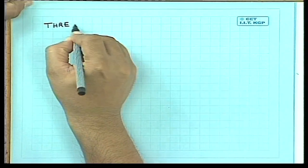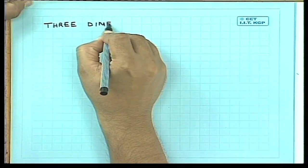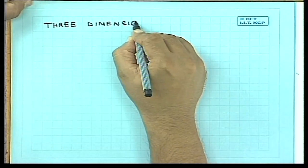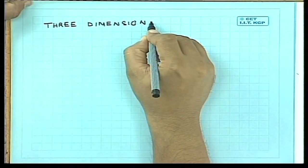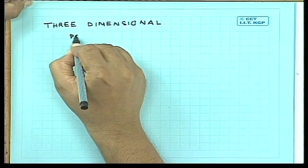Until now, we have been dealing with one-dimensional potential well problems largely. Now let us go on to the three-dimensional situation. We shall now look at a situation where we have potentials and a particle which can move in all three dimensions.